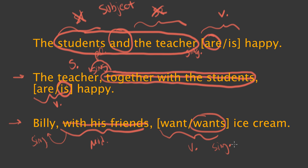To recap: the only way to ever create a compound subject is using the word 'and,' and compound subjects are always plural. There are a bunch of other scenarios which may look like compound subjects, but if they don't use the word 'and,' they are not compound subjects — and you should be eliminating something because it's a modifier.